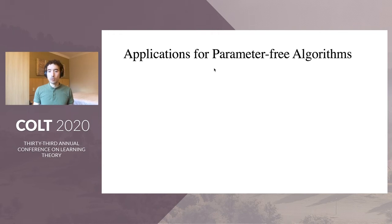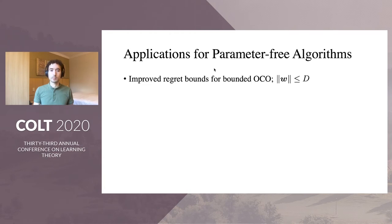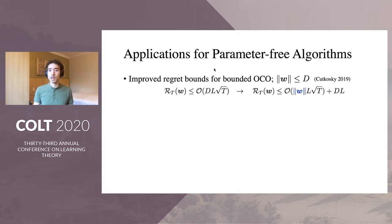Parameter-free algorithms have many applications. First, they provide improved regret bounds in the bounded online convex optimization setting. If the norm of the comparator is less than D, then parameter-free algorithms replace the typical regret bounds that scale with D with a bound whose main term scales with the norm of the comparator instead. When the norm of the comparator is small, this new regret bound is better than the previous one.